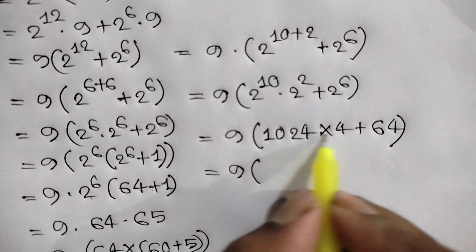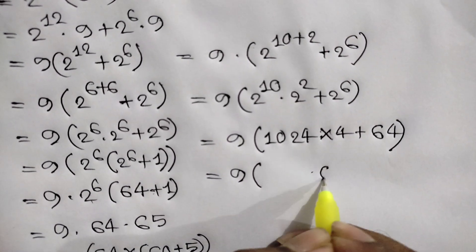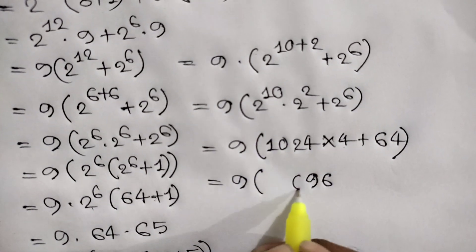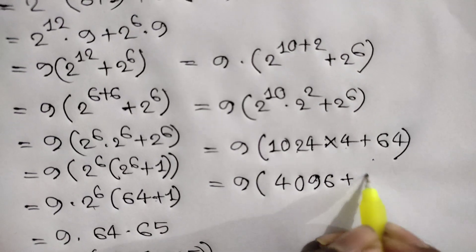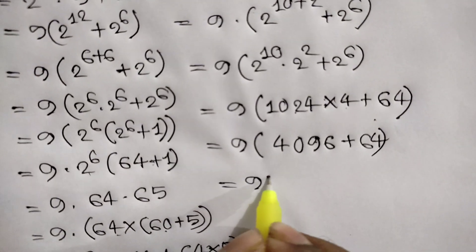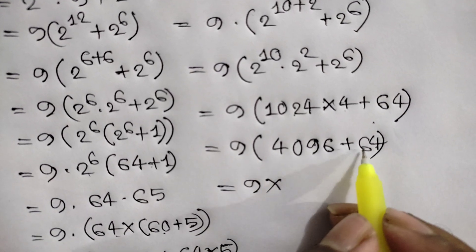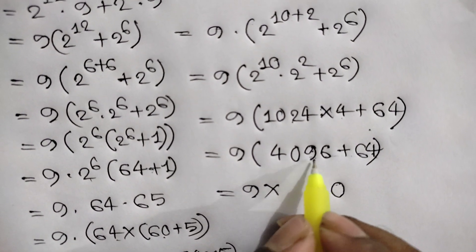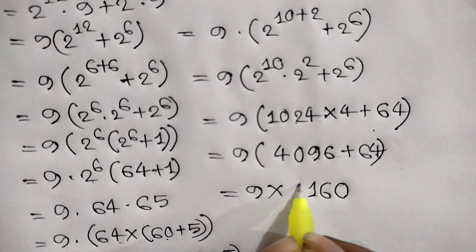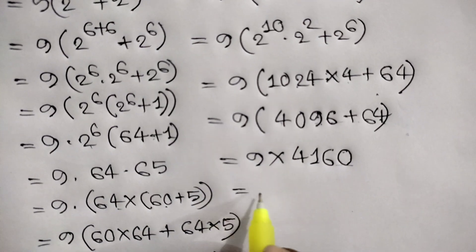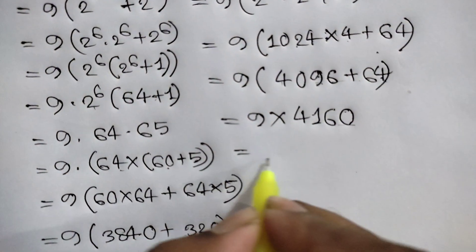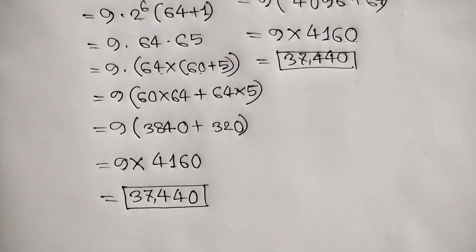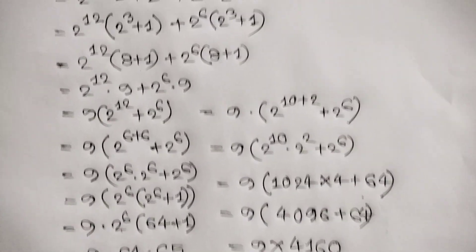So we have 9 times (1024 times 4 plus 64). Computing 1024 times 4: 4 times 4 is 16, carry 1; 4 times 2 is 8, plus 1 is 9; 4 times 0 is 0; 4 times 1 is 4, giving 4096. Adding 64: 4096 plus 64 equals 4160. Multiplying by 9 gives 37440, confirming our final answer. Thanks for watching — if you like this video please subscribe to my channel, see you in the next video, bye bye.